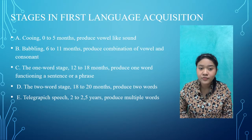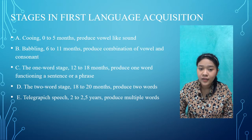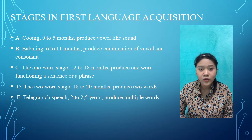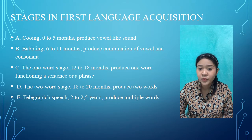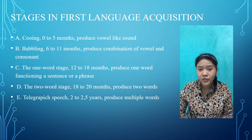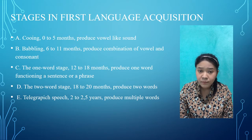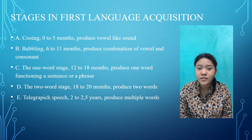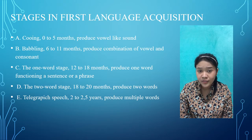The first stage in first language acquisition occurs around 0 to 5 months, where children produce vowel-like sounds. The child slowly becomes capable of producing sequences of vowel-like sounds such as 'I' and 'U'. By around 5 months, babies can already hear the difference between vowels like 'I' and 'A', and discriminate between syllables like 'ba' and 'ga'.